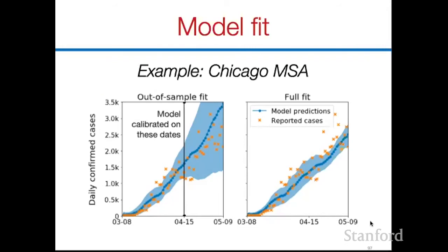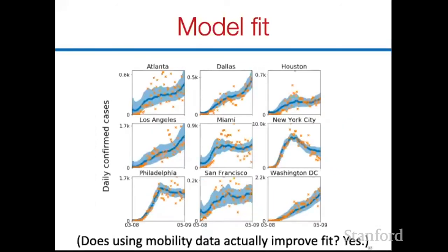The high-level point isn't that we have a super-predictive model — it's that we have a model fitting the data reasonably well that also enables very fine-grained questions. Questions you can ask include: what would have happened if we started distancing a week later, or distanced only 50% as much? What are the riskiest POI locations — potential super-spreader sites? What's the impact of different reopening strategies, like reopening POIs to only half capacity? And why do socioeconomic and racial disparities arise? Today I'll focus on that last question.